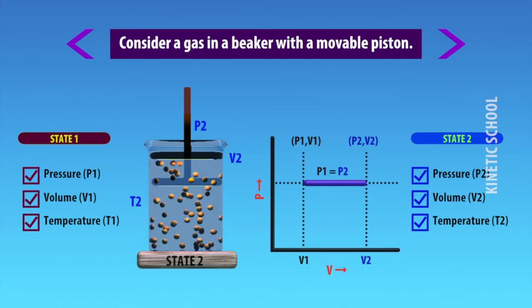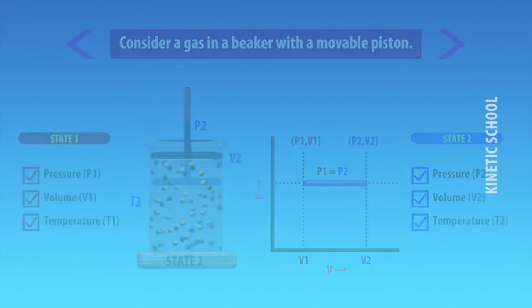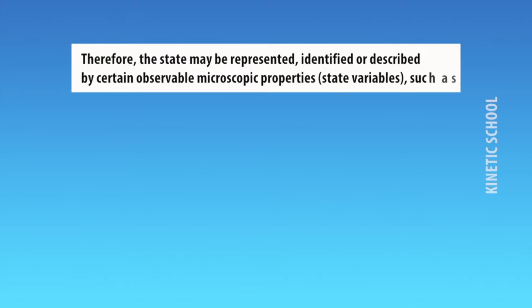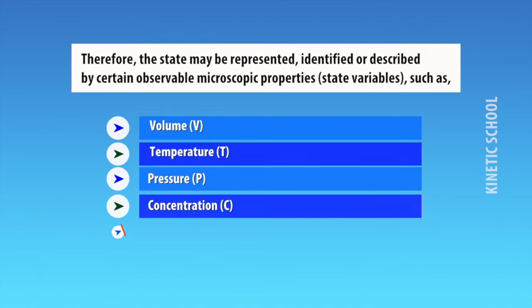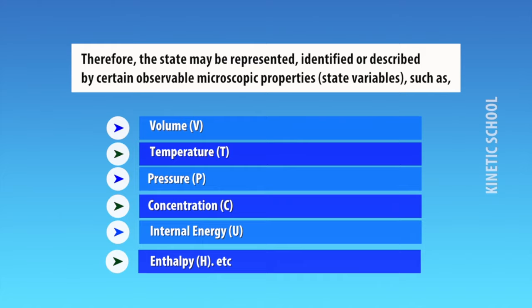At state 2, it has another fixed set of values: pressure P2, volume V2, temperature T2, etc. Therefore, the state may be represented, identified, or described by certain observable microscopic properties such as volume, temperature, pressure, concentration, internal energy, enthalpy, etc.